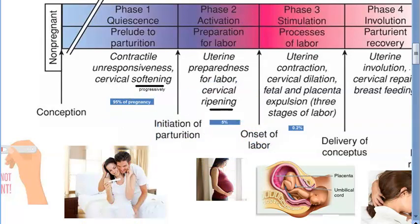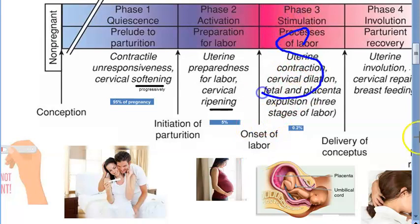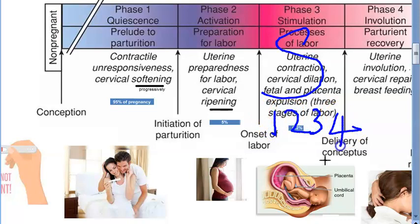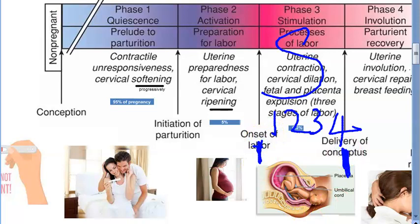The onset of labor is where phase three — stimulation — starts. This is the process of actual labor. Here all the stages of labor will come: stages one, two, three, and you can add four — one hour of observation. All that comes from onset of labor till the delivery of the fetus and placenta.